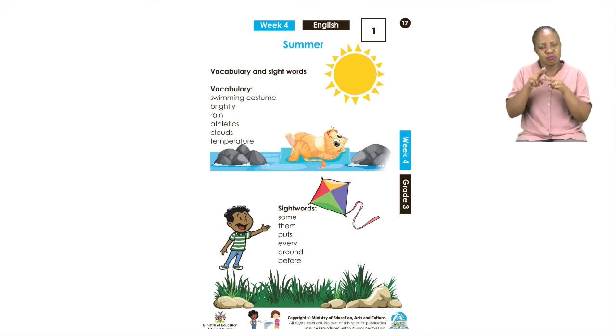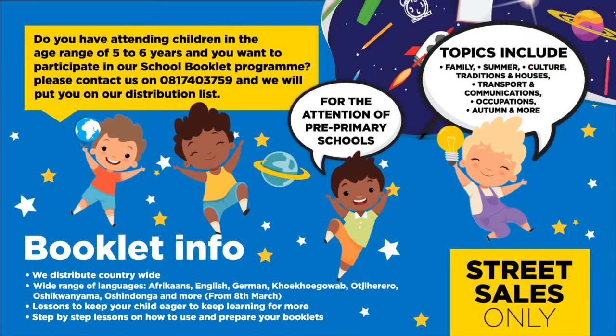Do you have children in the age range of five to six years and want to participate in our school booklet program? Please contact us on 0817 43759 and we will put you on our distribution list for pre-primary schools. Topics include family, summer, culture, traditions and houses, transport and communications, occupations, autumn and more. We distribute countrywide in over seven different languages.